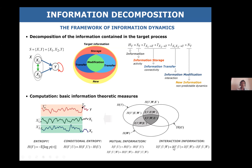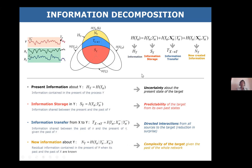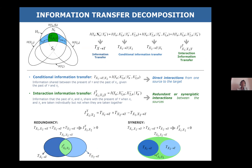We have mutual information and then interaction information in the case of three variables. Looking at the formula: we have the present information, which is basically the entropy of the system; information storage, which is the mutual information between the present and past of the target system; and information transfer, reflecting how much our prediction error of the target is reduced when we include something from the past of other time series. Then we have new information.